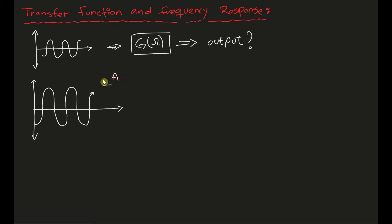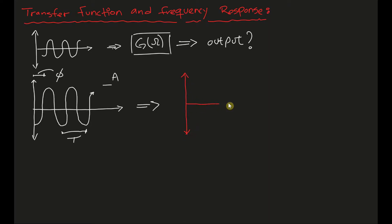This signal is going to have an amplitude of A, it's going to have a phase, and it will have some sort of period T. This is my input, and it goes through the dynamical system. The output that I get from the dynamical process is going to have a different amplitude, it will have a different phase, but the period usually stays the same.